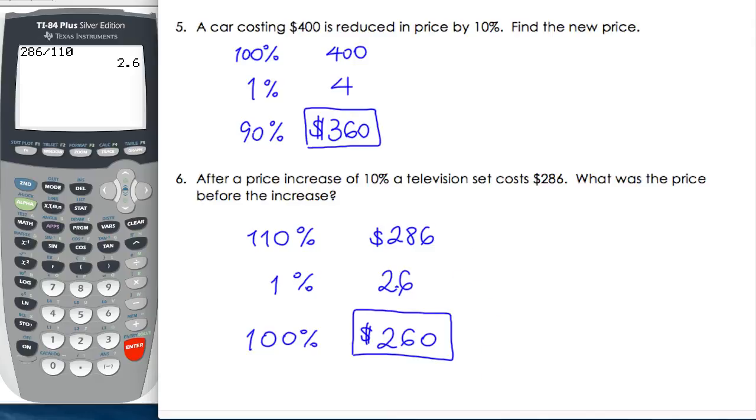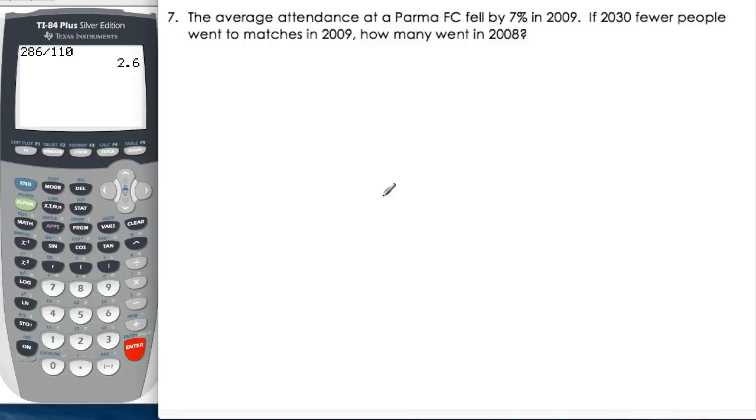One more? Yes. Number 7. The average attendance at a Parma FC fell by 7% in 2009. If 2030 fewer people went to the matches in 2009, how many went in 2008? Okay. So, the key bits there are 7%, fell by 7%, and 2030 fewer. Those are the things that we are given, so we know 7% is 2030.